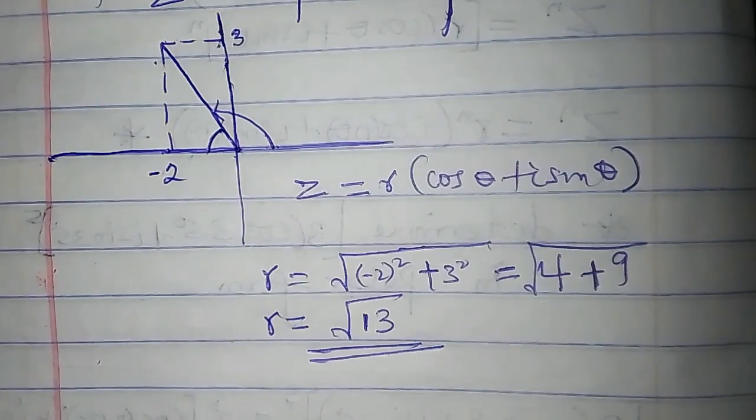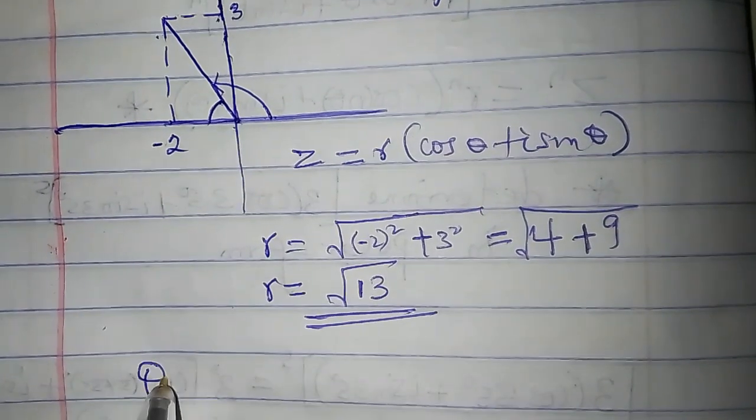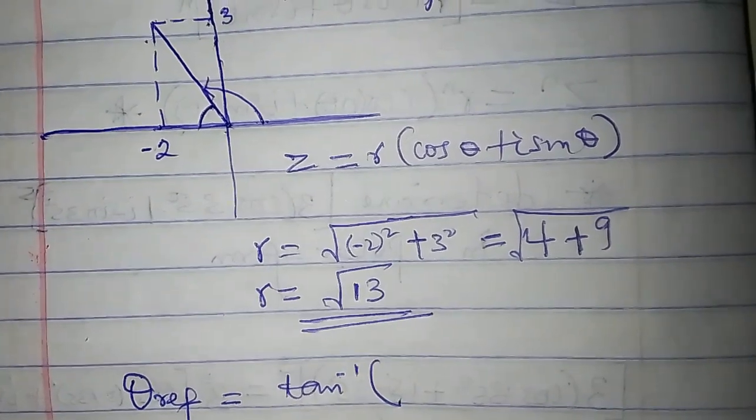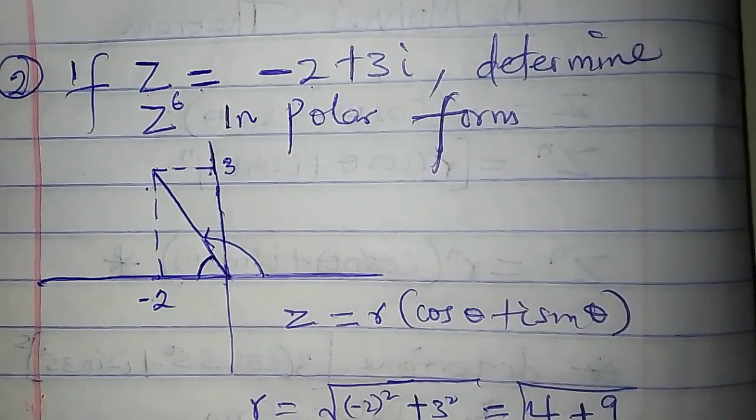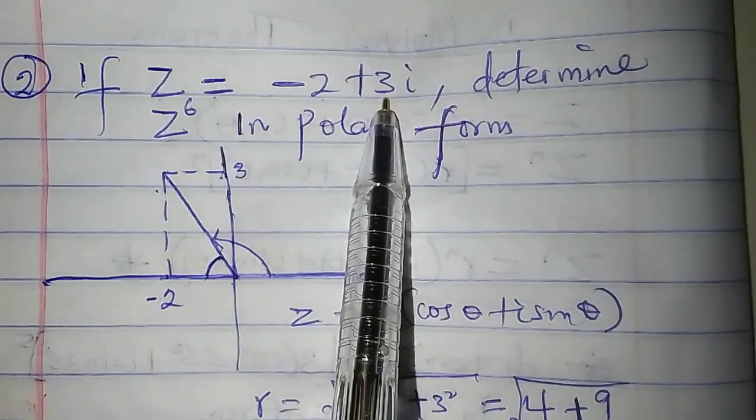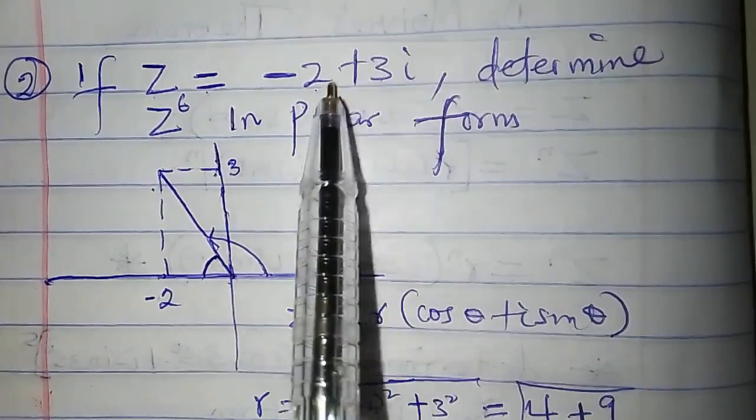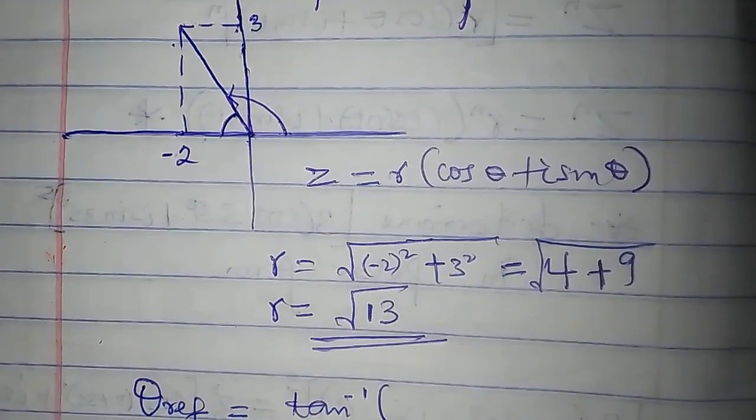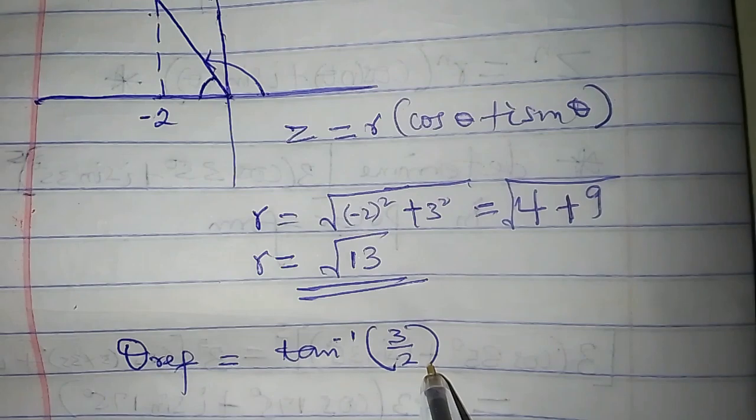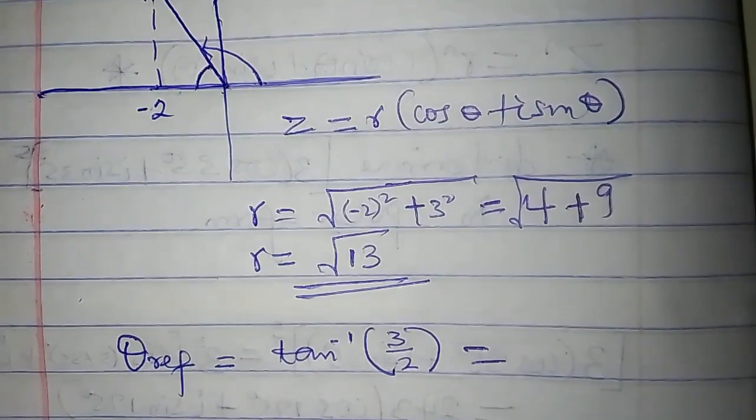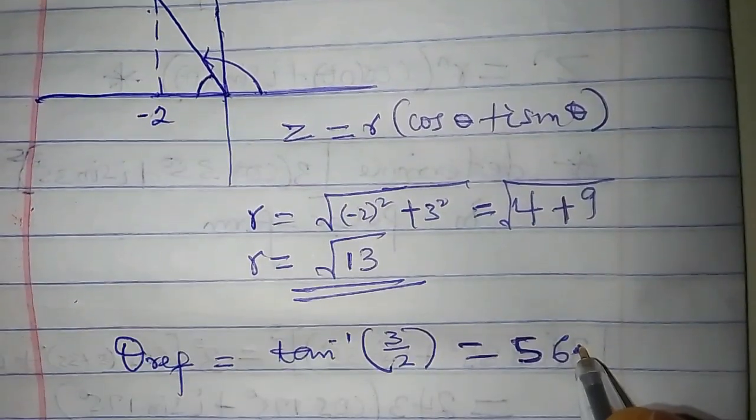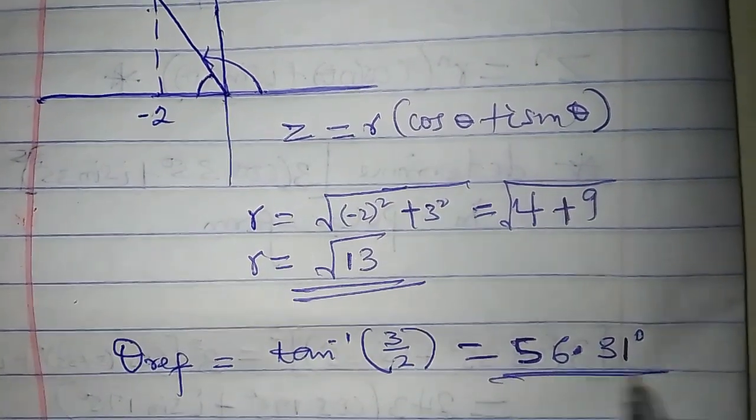What is the reference angle here? The reference angle is the tan inverse of b over a, which is tan inverse of 3 over 2. We use the positive value of 2. The reference angle is tan inverse of 3 over 2, and that is equal to two decimal places 56.31 degrees.